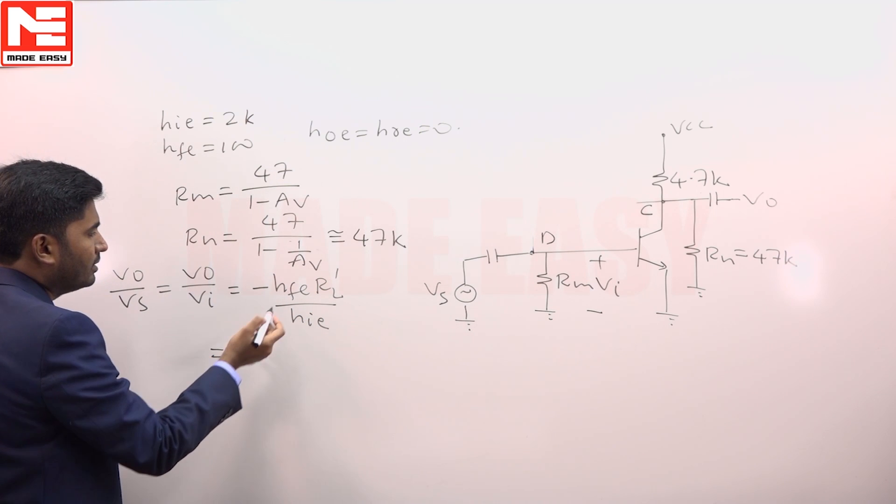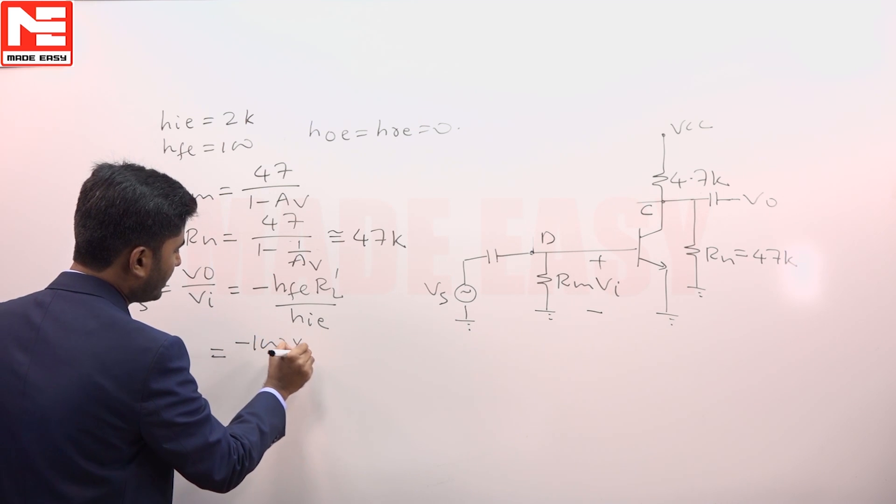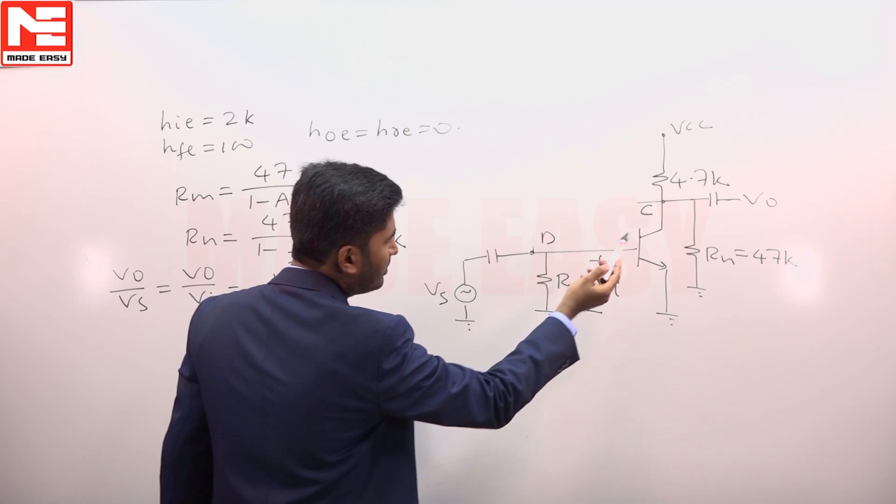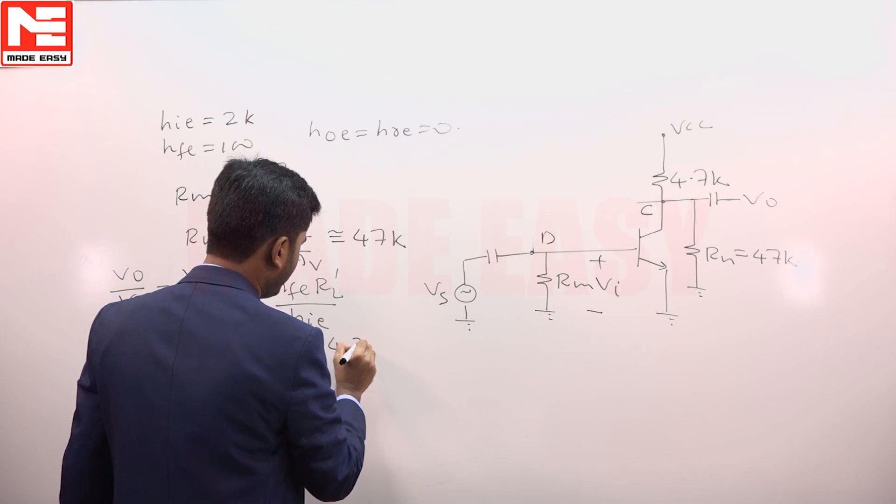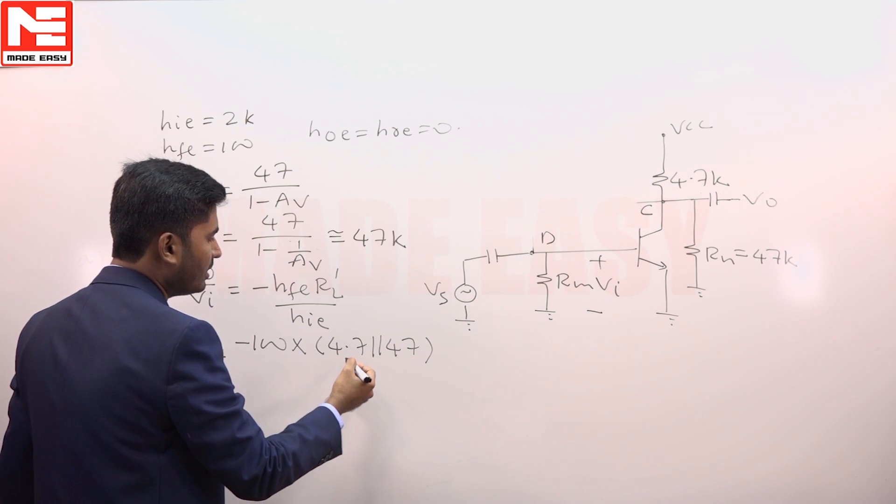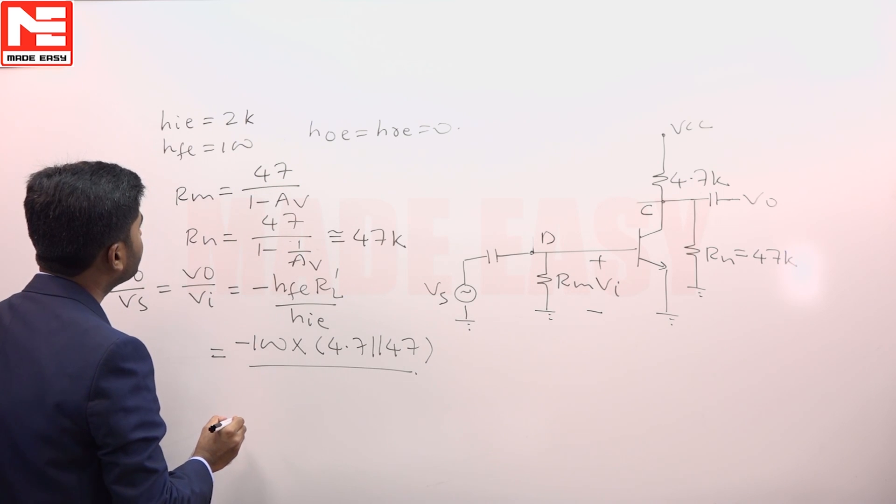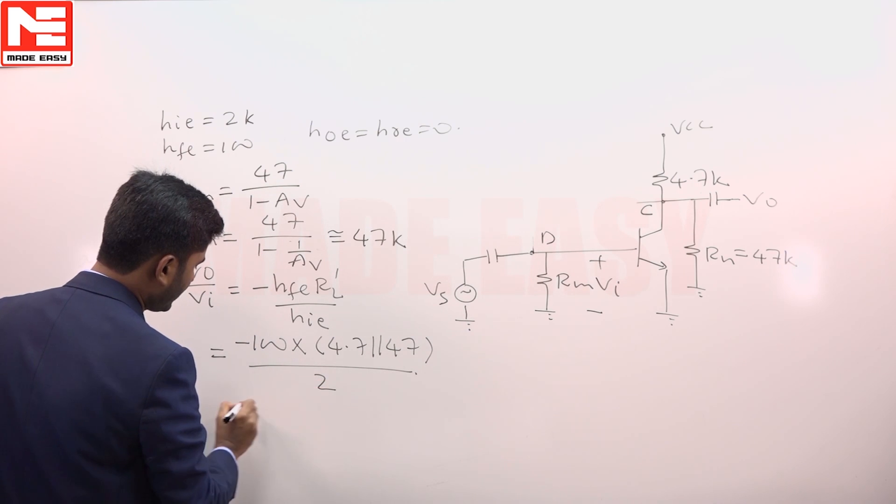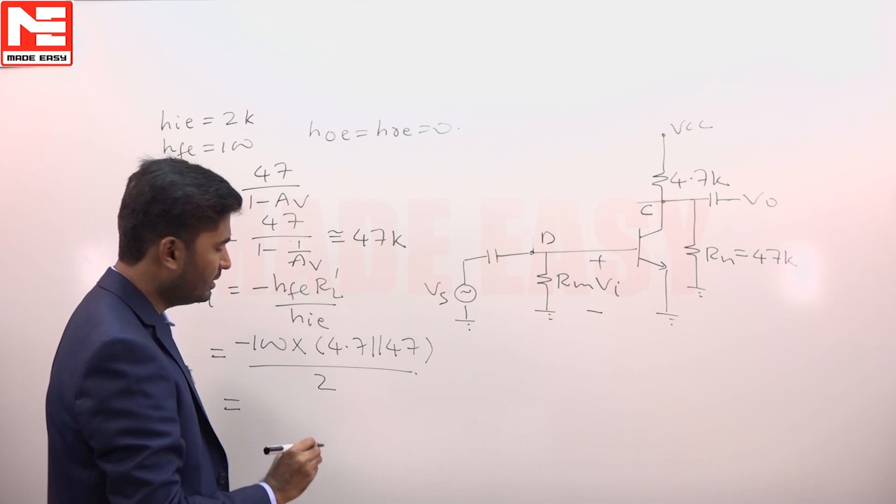If you substitute here the given H parameters, H f e given as 100, and R l dash will be the parallel combination of 4.7k and 47k, 4.7 into 47, 4.7 parallel 47 divided by H i e. H i e given as 2 kilo ohm. If you calculate this gain, it will evaluate to approximately minus 213.